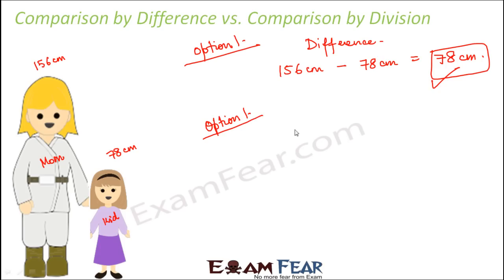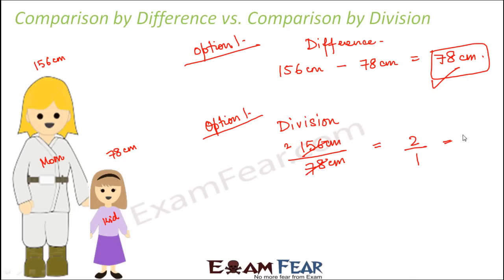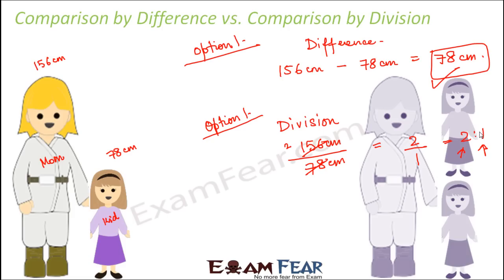The second option is to find the ratio — comparison by division. You divide the mother's height by the daughter's height: 156 divided by 78 equals 2, so the ratio is 2-to-1. This shows that the mother's height is twice that of the daughter's. It's like placing two kids one on top of the other to get the mother's height — that's what comparison by division tells us.